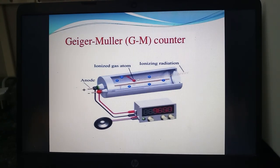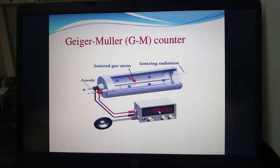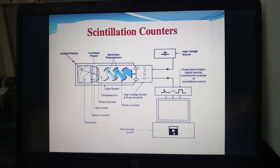In the Geiger-Müller counter, ionized gas atoms are introduced and ionizing radiation is applied. There is a cathode and anode which detect units of radioactivity and measure how many radioactive elements are present. The scintillation counter is also a very important counter that can detect the radioactivity of some elements through a complex process.